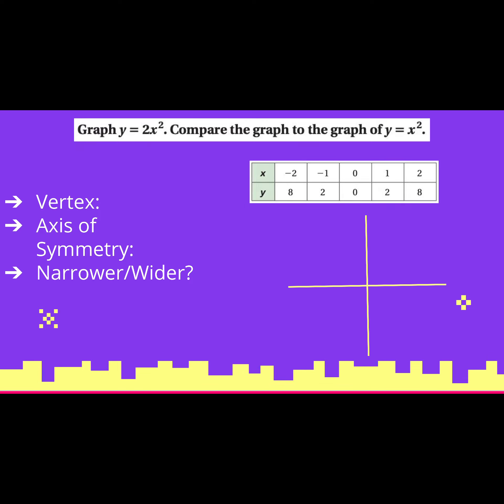Here's a question similar to what you'll see on the practice: graph y equals 2x squared. So remember, 2 is our a value — right in front of the x squared. Compare the graph to the graph of y equals x squared. Just like we did in chapter 5, they give us something to graph and want you to compare it to the parent function. When we need to graph one of these, we want to make a table with our x values — which we get to choose — and our y values.